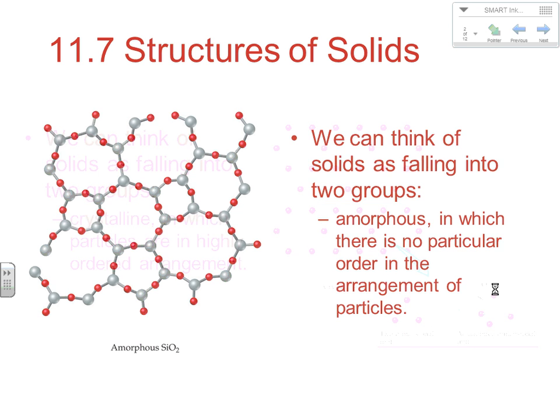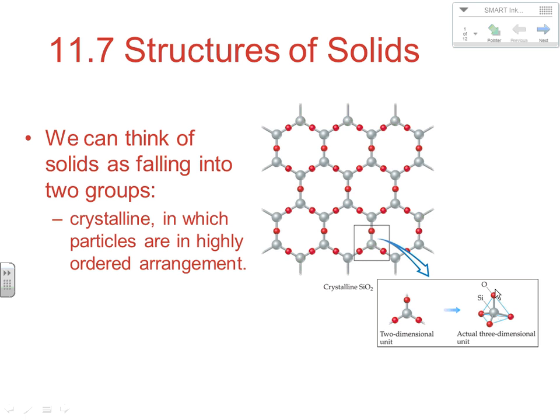With a crystalline solid, since you have a very ordered arrangement, you have a very specific energy to your intermolecular force. Therefore when you heat it up, you'll reach a certain temperature at which the particles have enough energy to break away — they need enough energy to overcome intermolecular forces, and that will happen all at one specific temperature. So with a crystalline substance you have a very specific melting point, and then all of your energy goes to break intermolecular bonds.